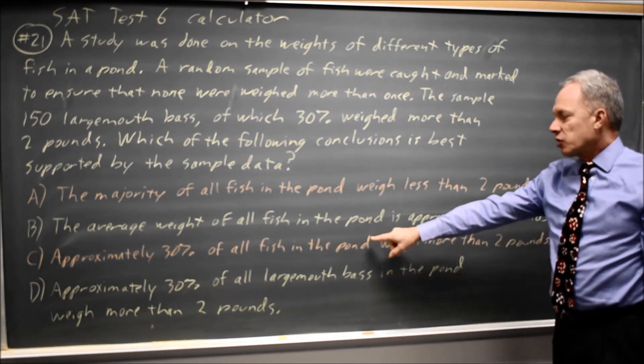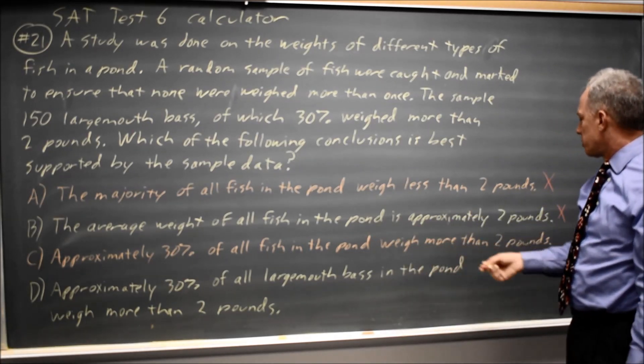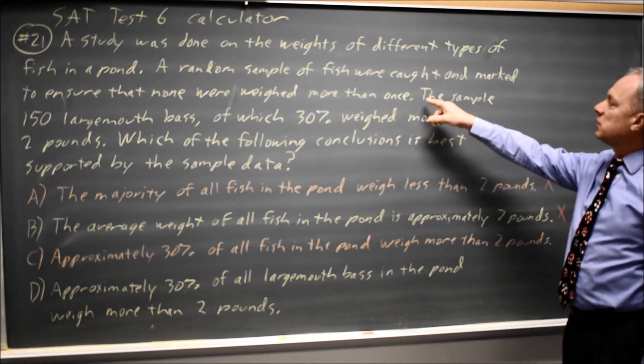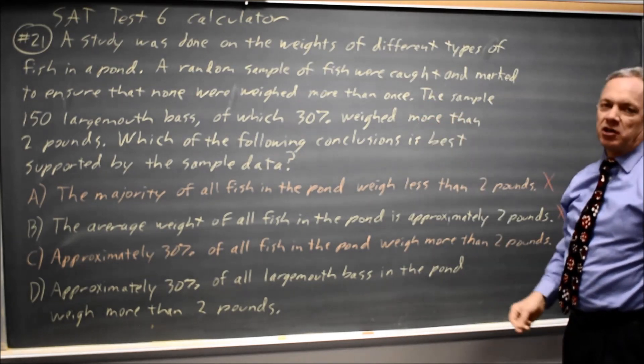Let's try C. Approximately 30% of all fish in the pond weigh more than 2 pounds. Again, they're talking all fish in the pond when the information provided in the question is only largemouth bass, so choice C is wrong.